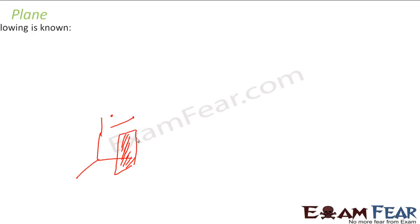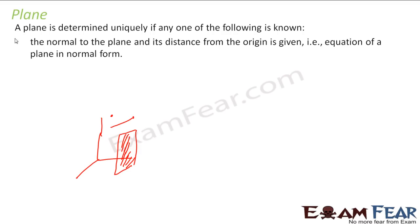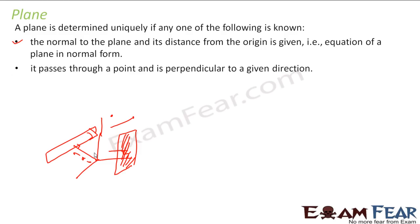So a plane is determined if you know the normal to the plane — that is this perpendicular — and you know the distance of this point from the origin. For example, from the origin, you know that there is a plane like this, and you know the perpendicular distance of this normal from this plane. In that case, you can uniquely tell that this is a plane, because you know the direction and you know the distance from origin. It also passes through a point and is perpendicular to a given direction. If it passes through three given points, then also we can specify.